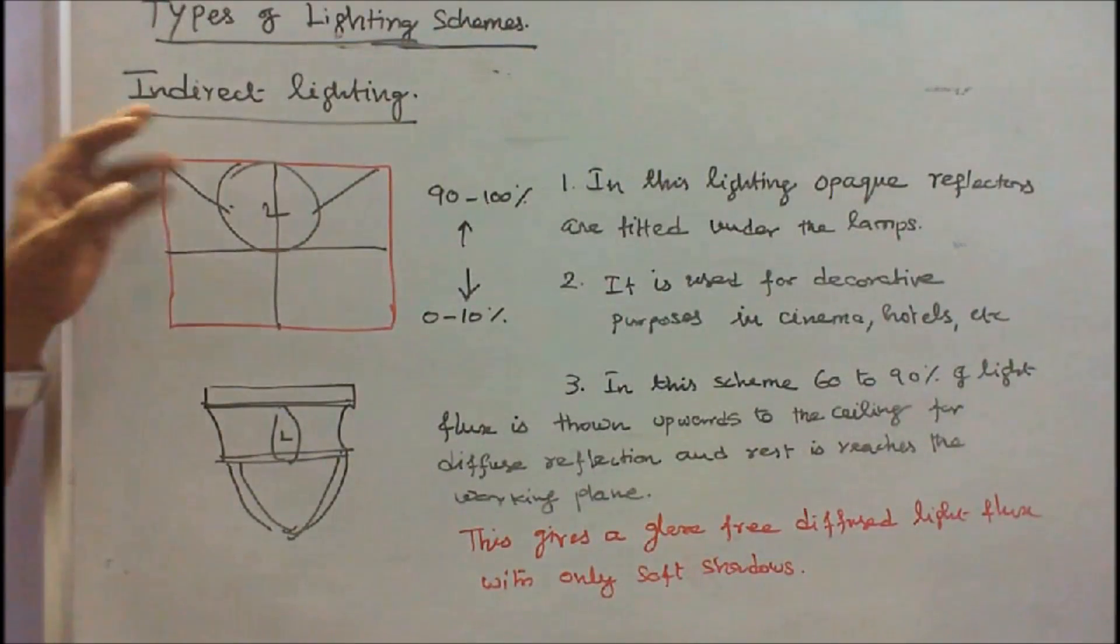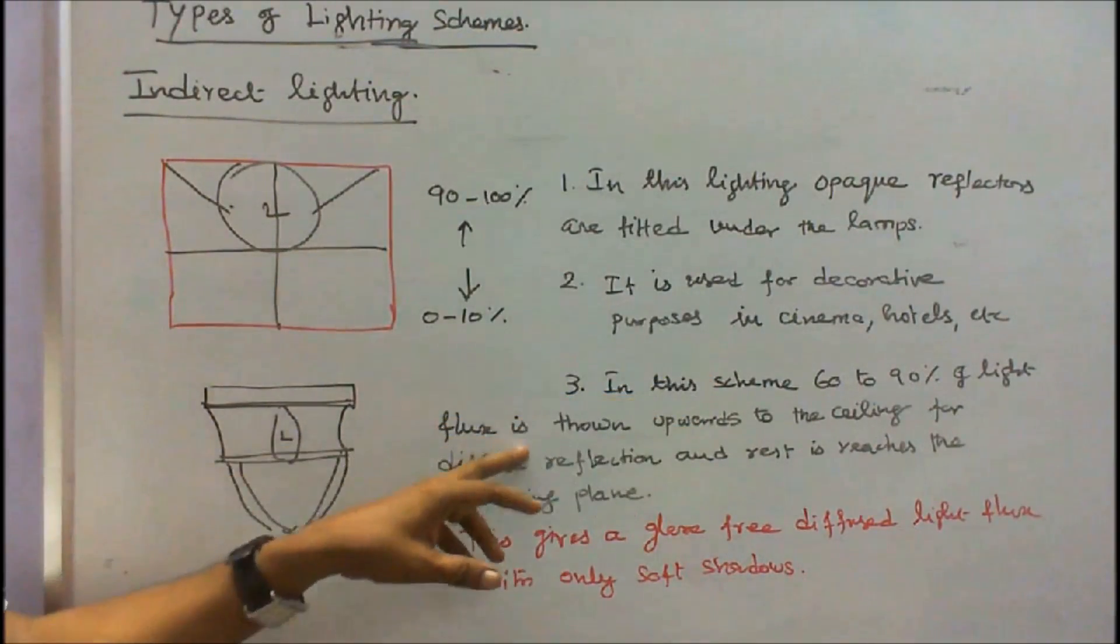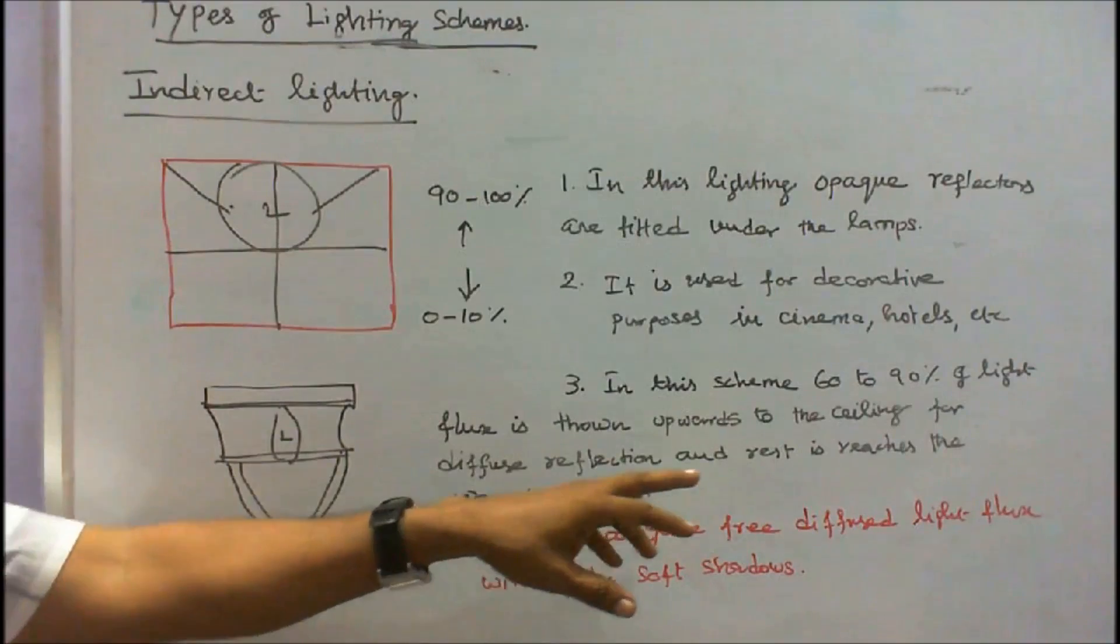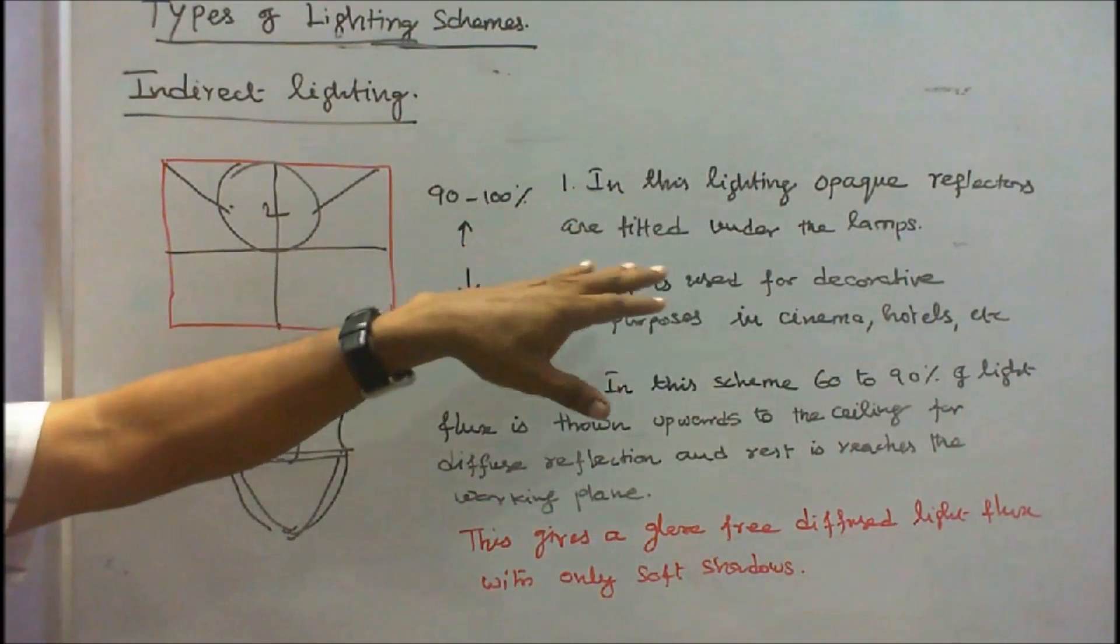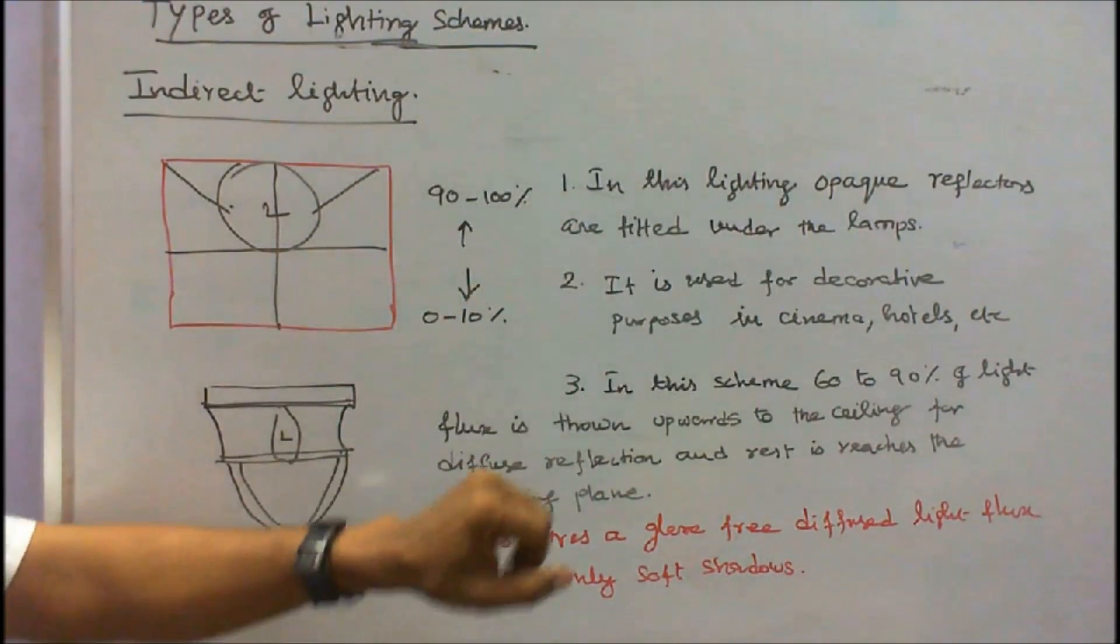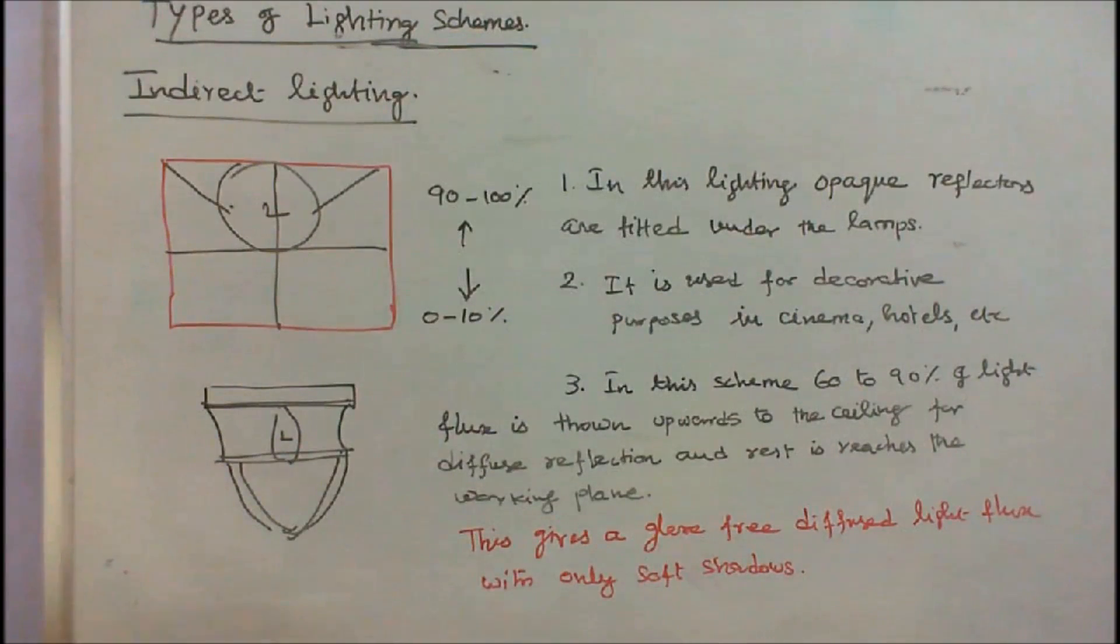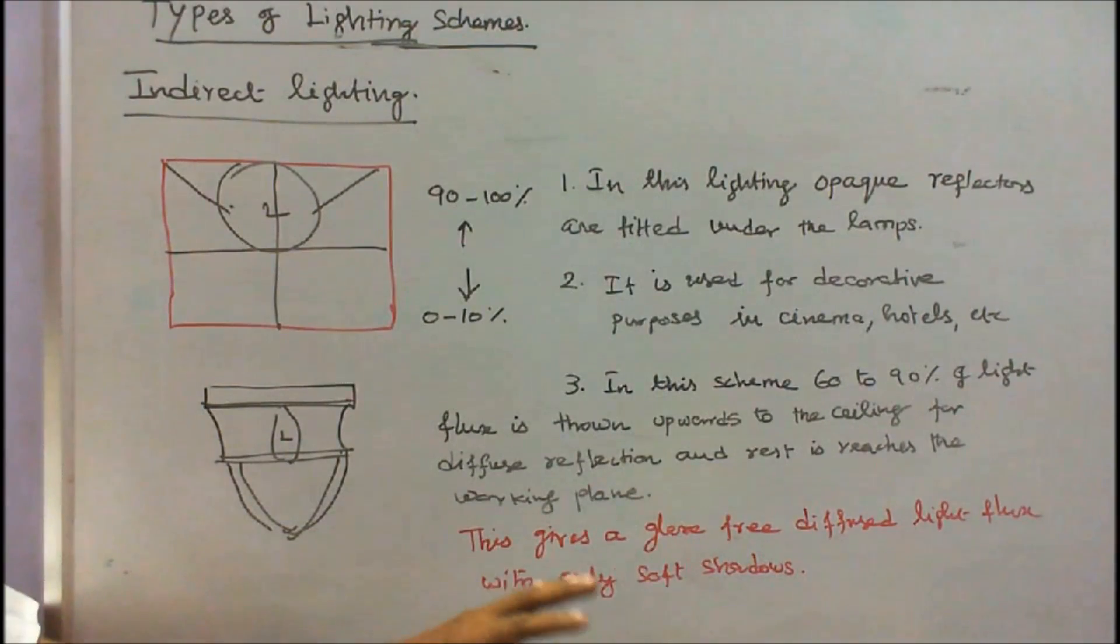The second is indirect lighting. In this scheme, 60 to 90% of light flux is thrown upward to the ceiling for diffuse reflection and the rest reaches the working plane. In this lighting, opaque reflectors are fitted under the lamps. It is used for decorative purposes in cinemas, hotels, etc. This gives a glare-free diffused light flux with only soft shadows.